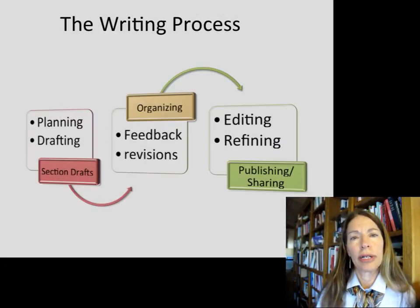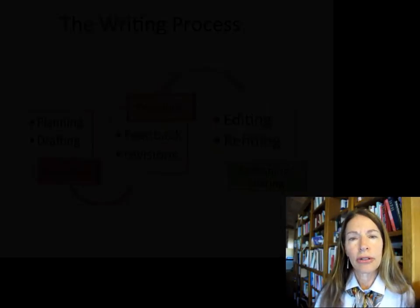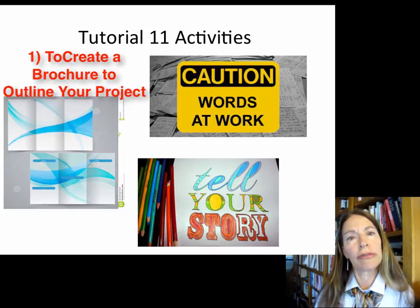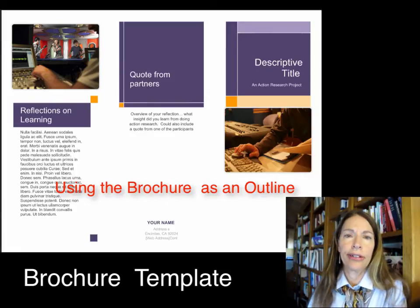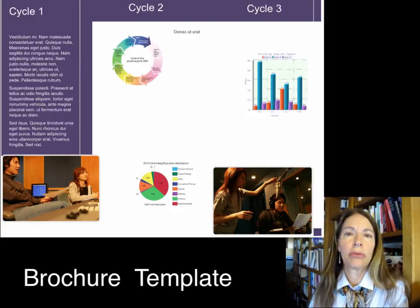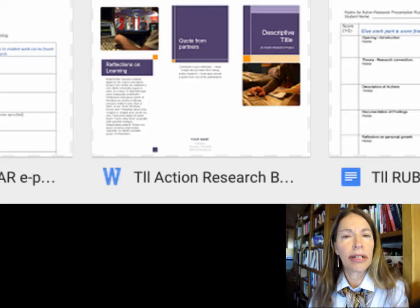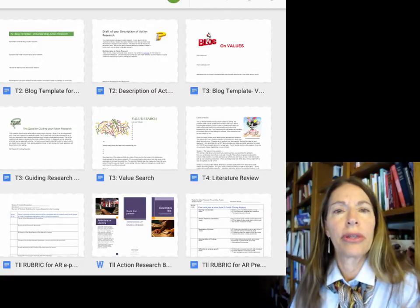Now we're going to talk about how you write your research report. I hope I've convinced you that it's important to write about — or create a website about — what you've done. The first activity in tutorial 11 is to create a one-page brochure, front and back, that describes the process of your action research, the cycles, and some insights you've learned. Done this way, it forms an outline to organize your thinking as you go to write your longer document. I've also gone back to the tutorials and I'm almost finished creating templates for each of the activities so that you'll come to the point of writing your report with all your work in one place.